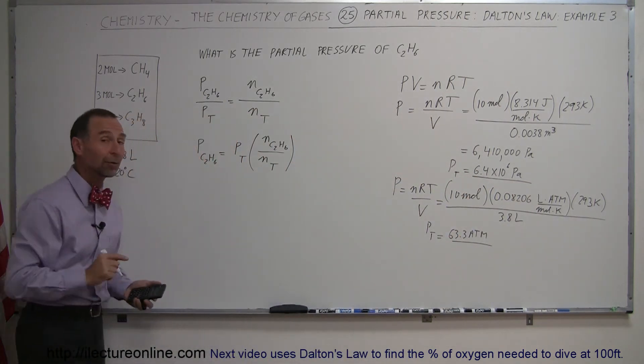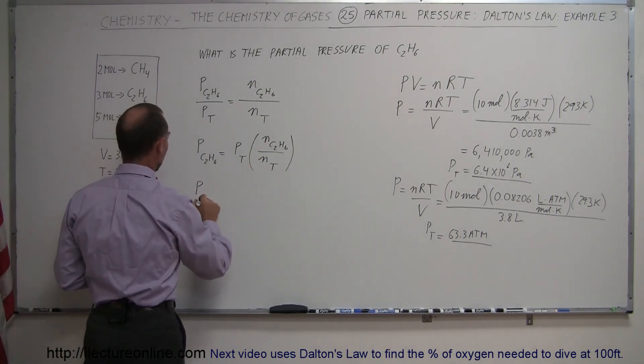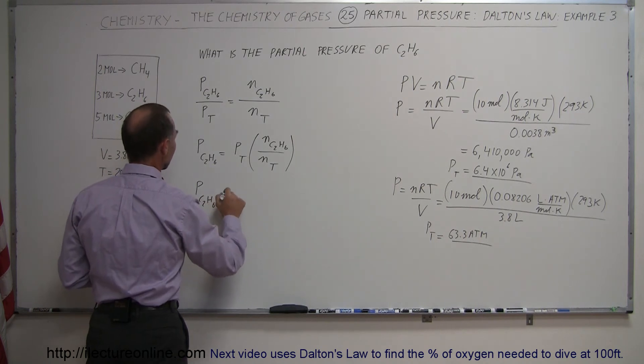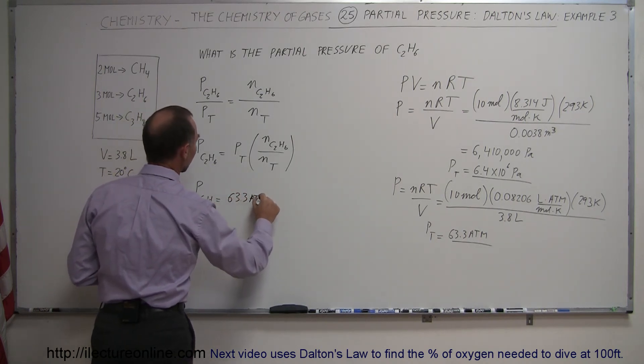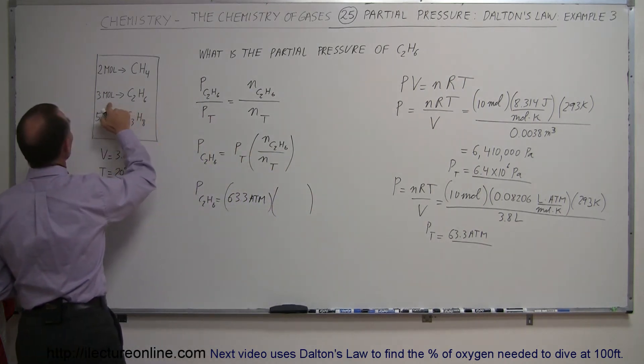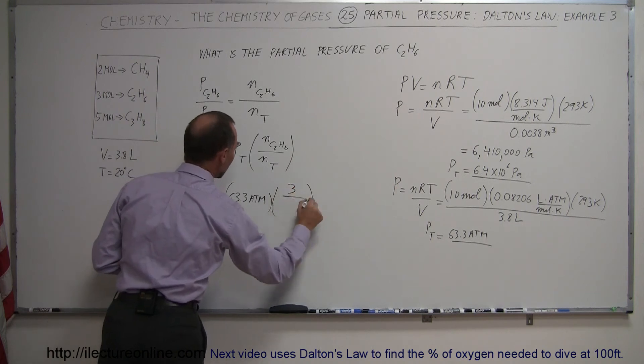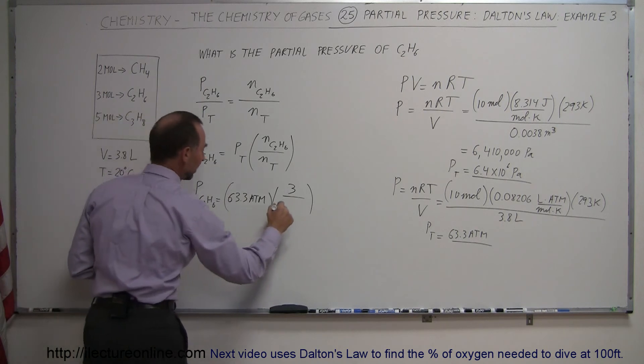Now we'll calculate the partial pressure of ethane. The partial pressure of ethane equals the total pressure, 63.3 atmospheres, times the ratio. We have 3 moles of ethane. The total gas is 2 plus 3 plus 5, which is 10 moles.